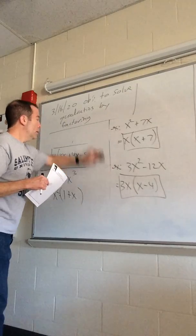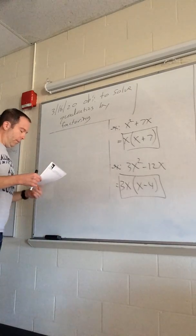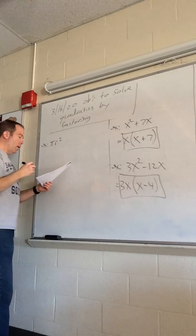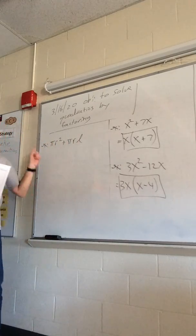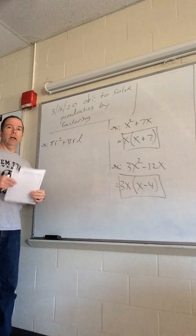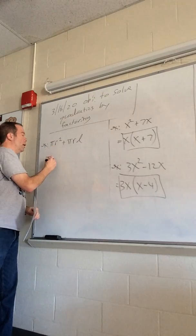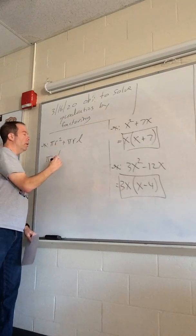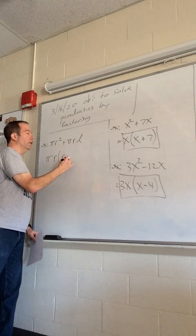Let's look at something that looks trickier but really isn't, because all we have to remember is that pi is just a number. We have πr² + πrl. We see a pi in each term, so we can take out pi. We see two r's in the first term and one r in the second, so we take out an r. Pi·r times what makes πr²? We need an r. And pi·r times what makes π·r·l? We need an l.